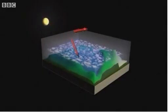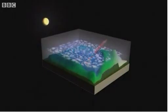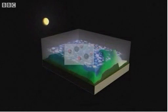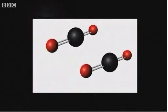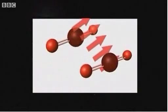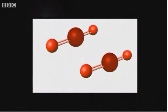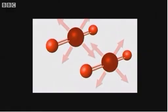Some of that energy penetrates through the Earth's atmosphere and is reflected off the surface. That surface reflection comes out as infrared or heat energy. The carbon dioxide molecule is particularly susceptible to that heat energy, and it absorbs the radiation and then re-radiates it, and this increases the temperature of planet Earth.